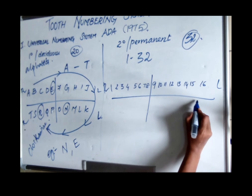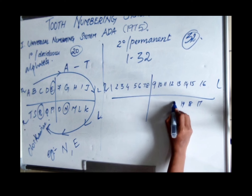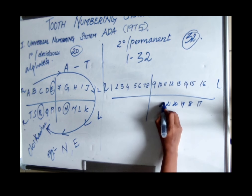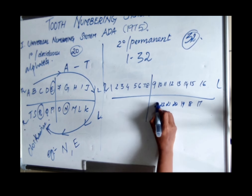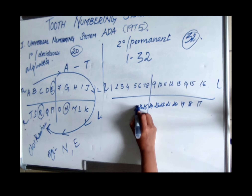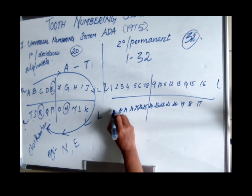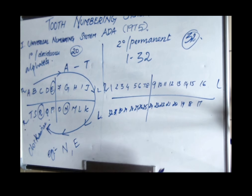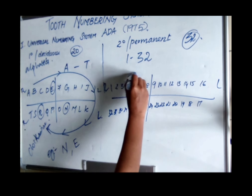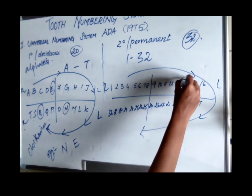Continuing clockwise, the mandibular left runs from 17 through 24, and the mandibular right runs from 25 through 32. So the numbering also follows a clockwise direction for the permanent dentition.